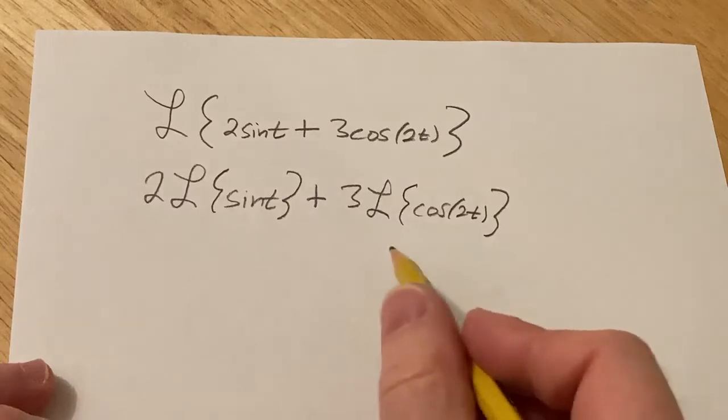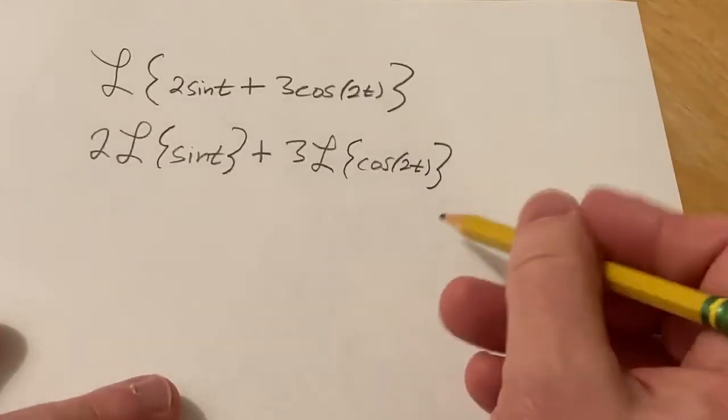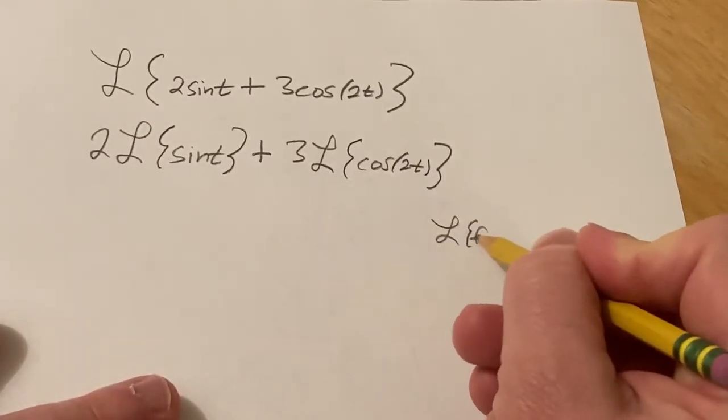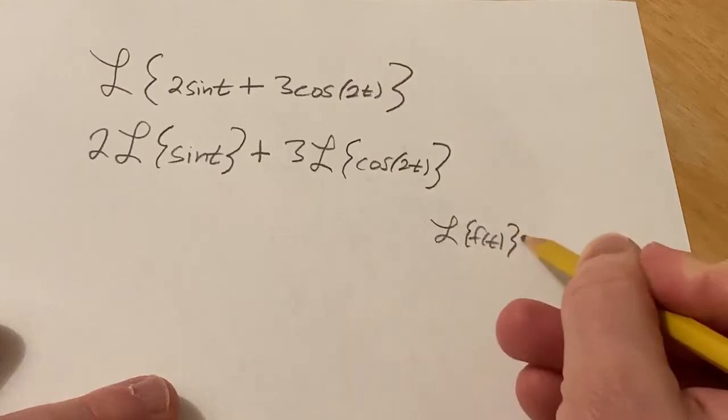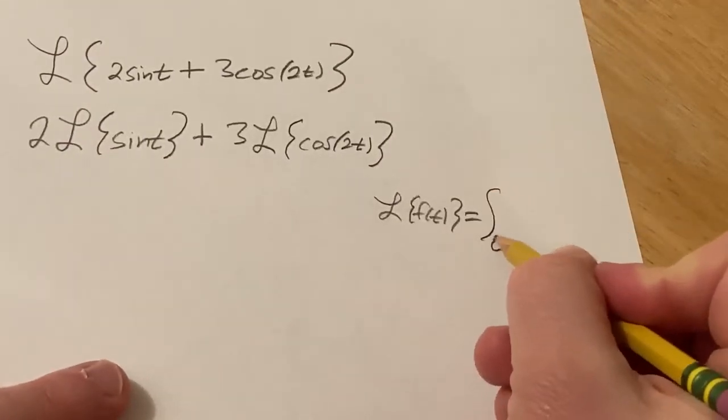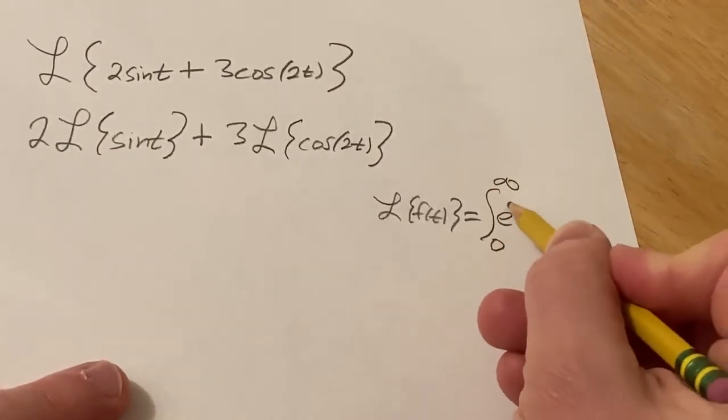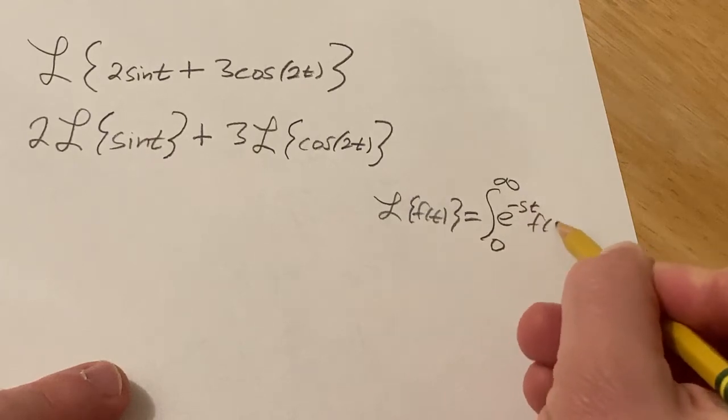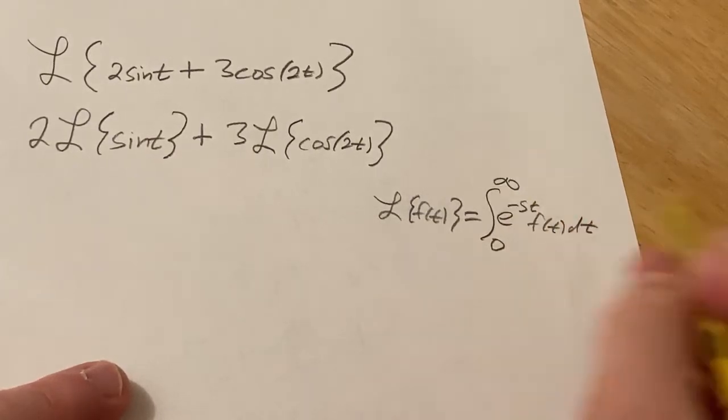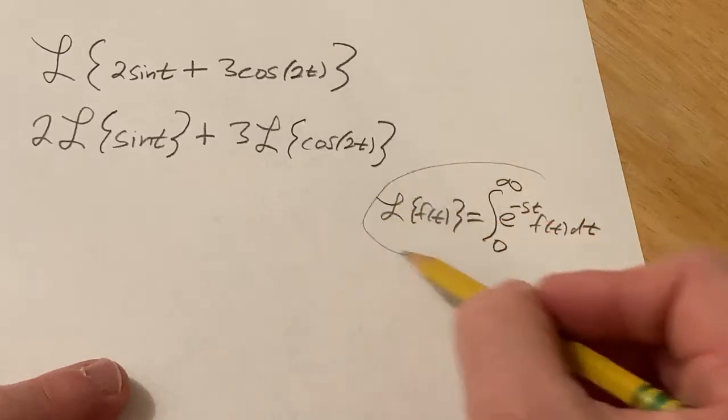And the reason is the Laplace is really just an integral. Recall that if you have the Laplace transform of a function f, that's really just the improper integral from 0 to infinity of e to the negative st times f of t dt, provided that this integral converges. That's the Laplace transform of a function.